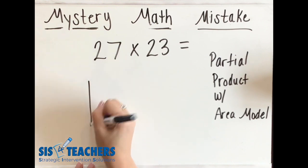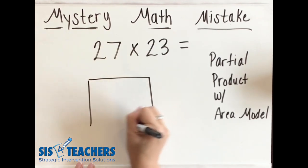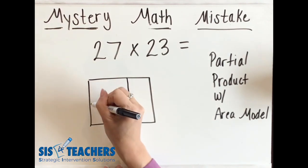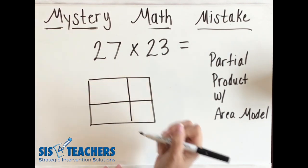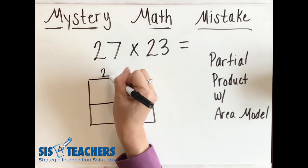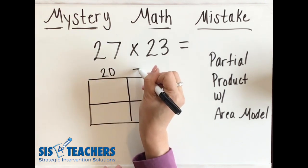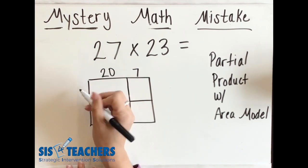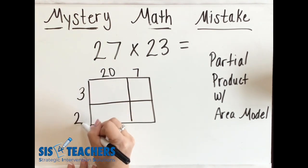So what I'm going to do is go ahead and make my area box. I'm going to make this one a little bit larger because it's going to represent my tens and over here I'm going to make it represent my ones. I'm going to decompose the 27 and make it 20 and 7 and then I'm going to decompose my 23 into 3 and 20.